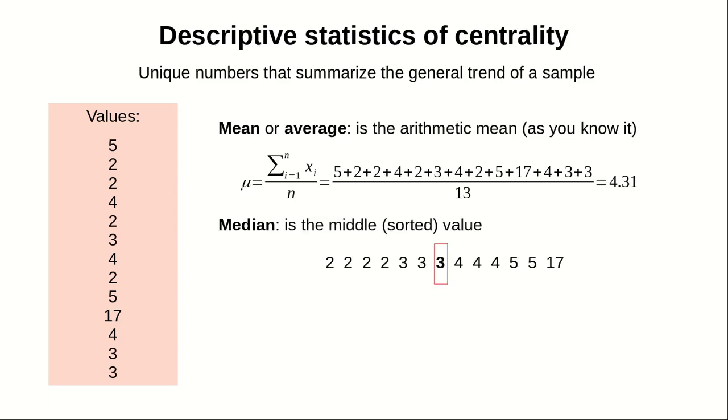And median is the value that is in the middle once you sorted all the numbers. In that case, it's 3. You can work it out.